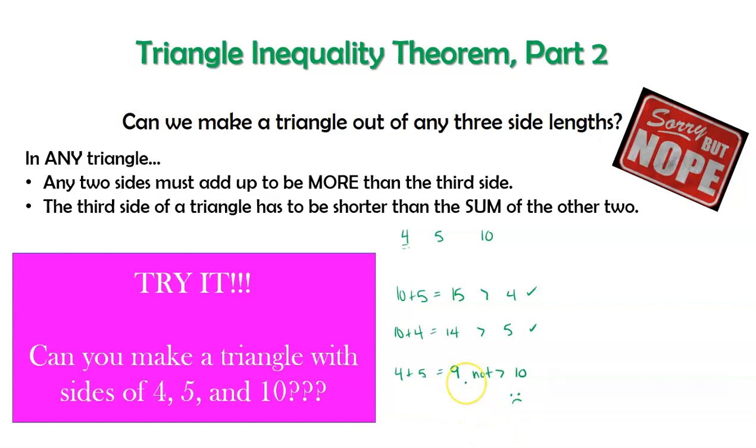So this is a big fat fail. I cannot make a triangle with side lengths of 4, 5, and 10. It is not possible. I want to show you why that is.